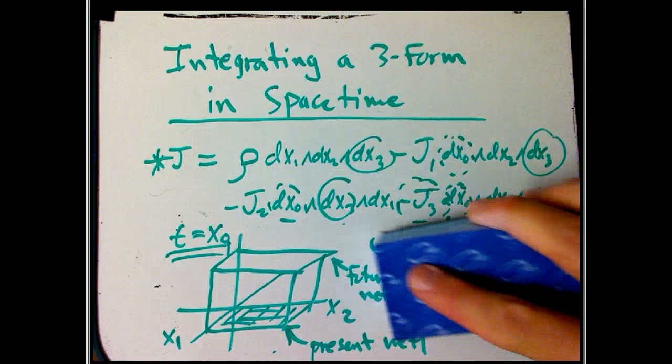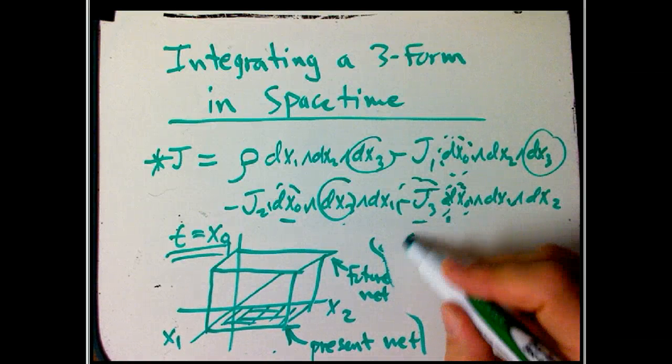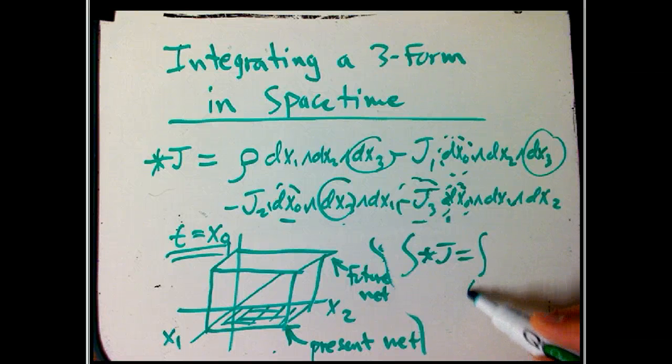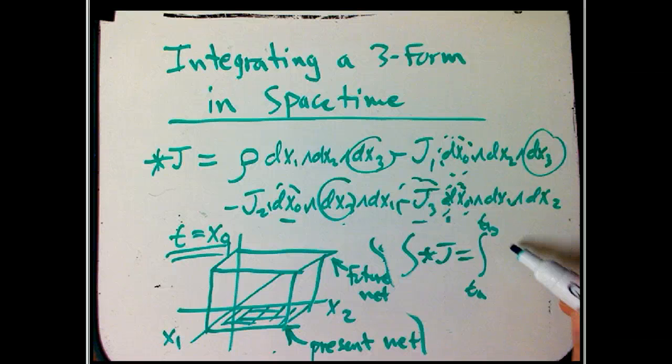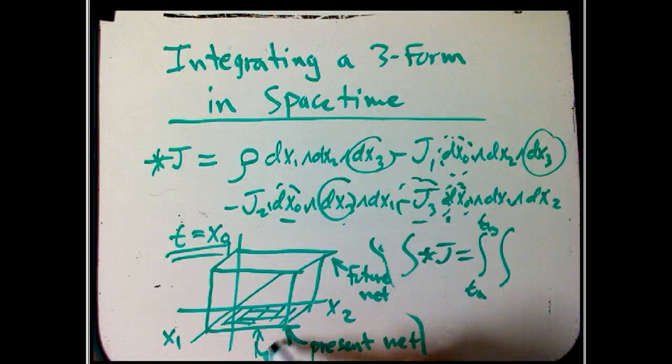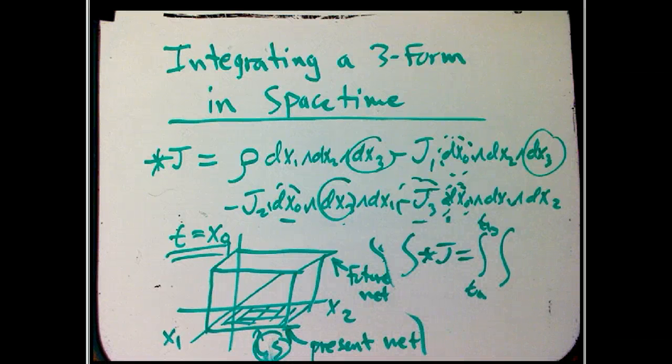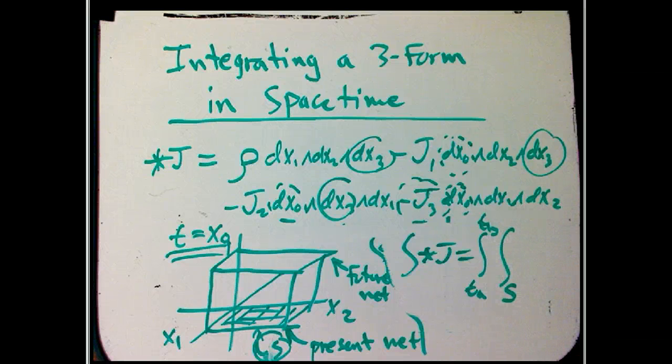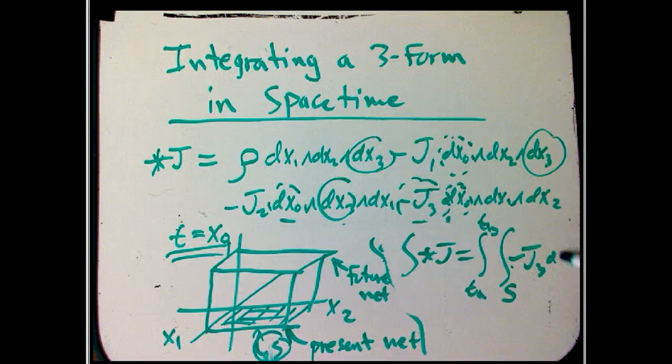So the integral of star j is now going to be the integral, now I'm going to break it up into time. I'm going to say, let's say, starting time to ending time. And then let's say this net, the physical, you know, I can't see that s, can you? Let's say the two-dimensional surface was, let's call it s. So this blob is really all the spatial points in s from time ta to tb.